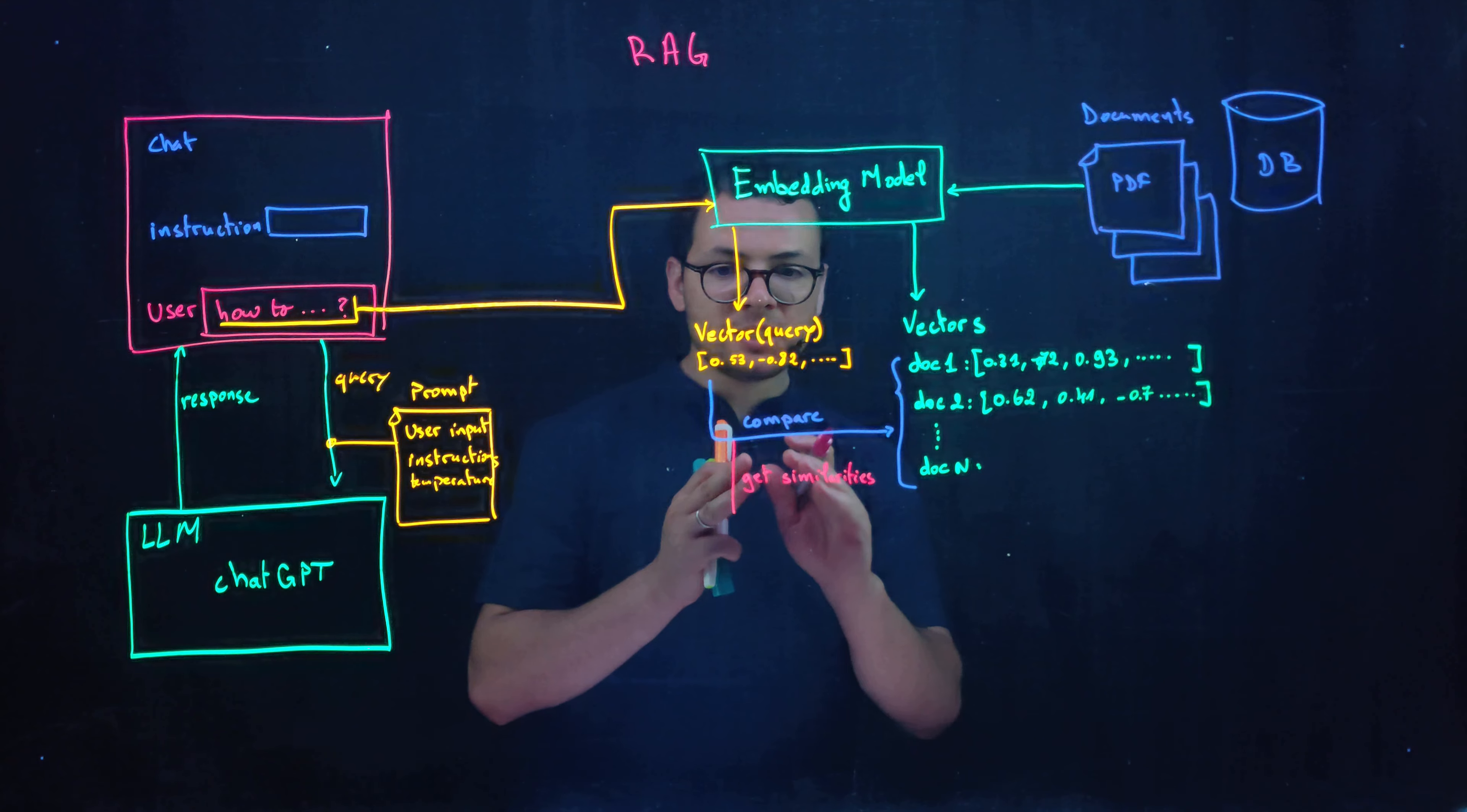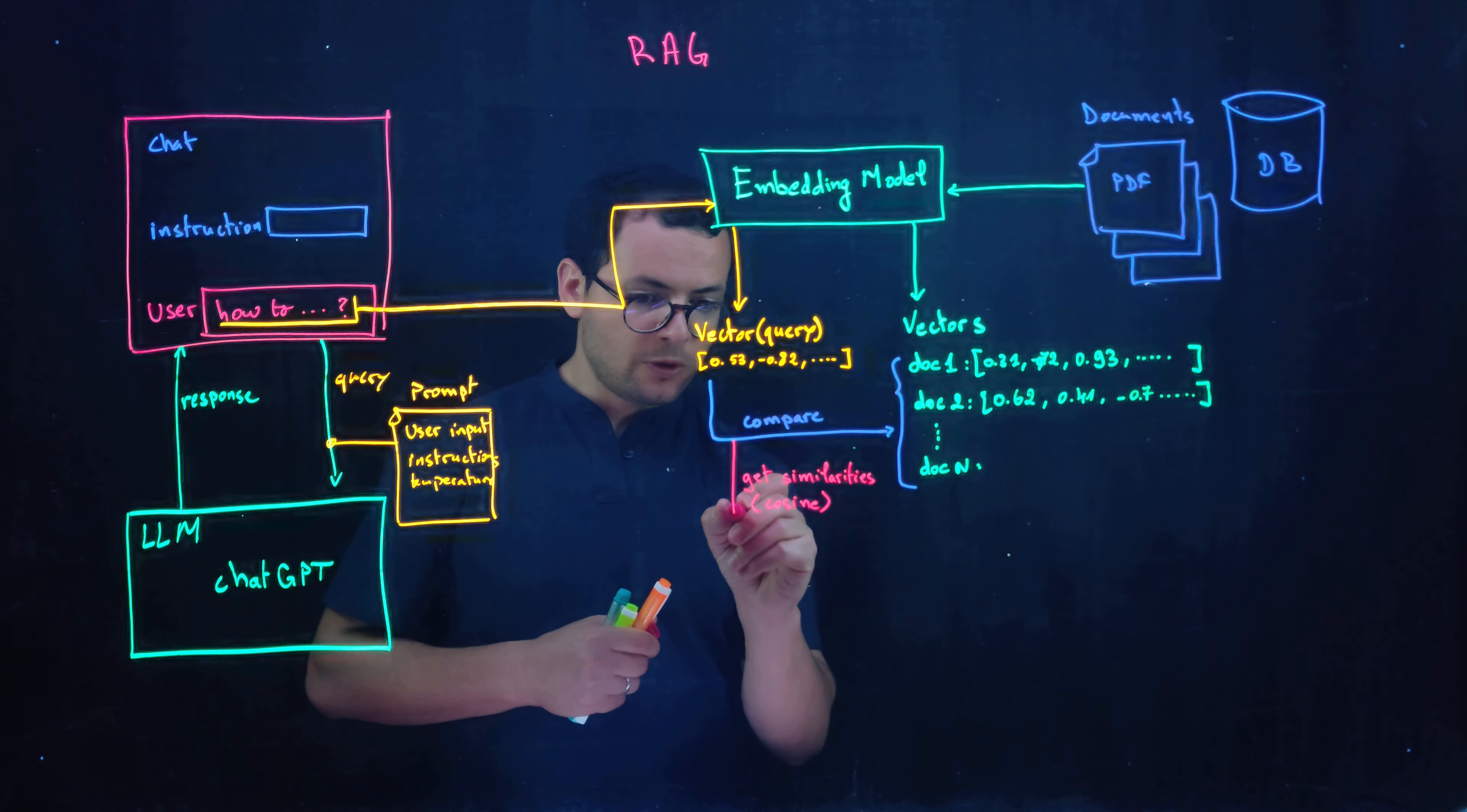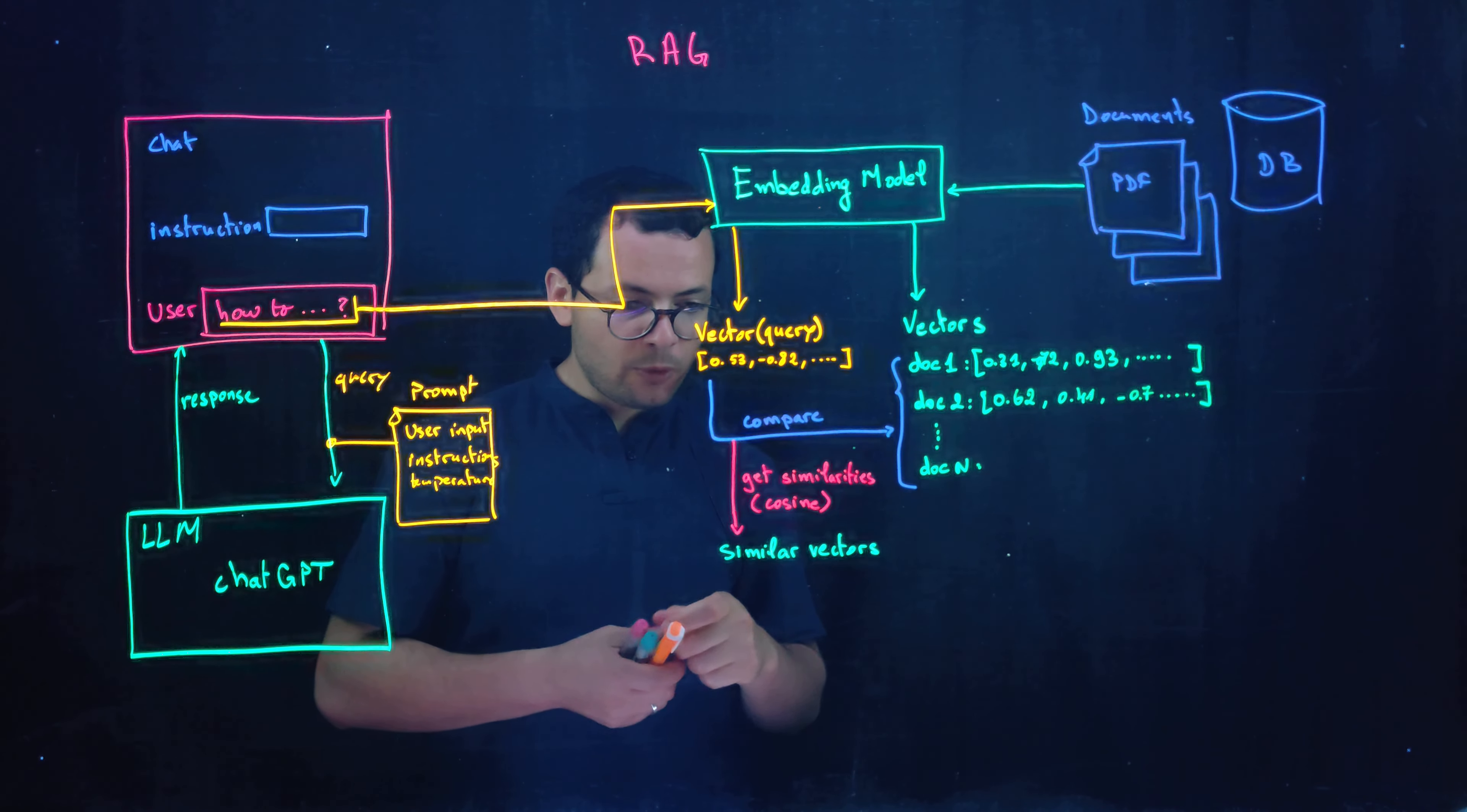So here we'll get the distance between the user vector and those document vectors using the cosine function for example. So the result here would be the similar vectors. So we can decide whether to get the top two, three or five similar vectors for example.